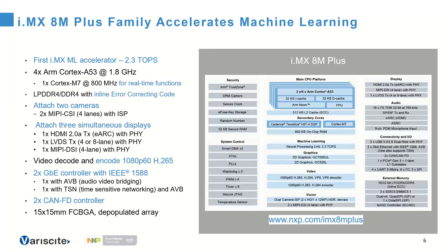The 8M Plus is a very welcome addition for applications that need two gigabit Ethernet controllers — most previous i.MX devices only had one — along with audio video bridging and time-sensitive networking (TSN) support, a pair of CAN-FD interfaces, a pair of high-speed USB 3 interfaces which also support USB 2, plus PCIe with one lane.